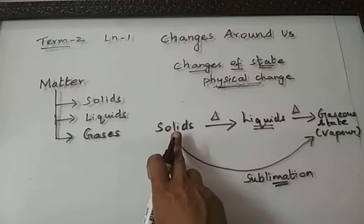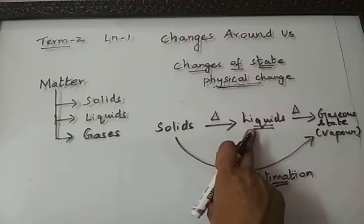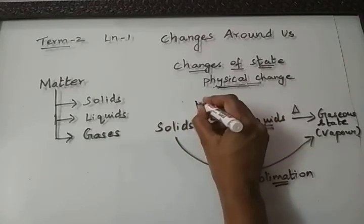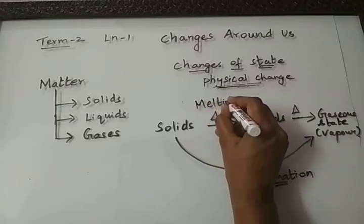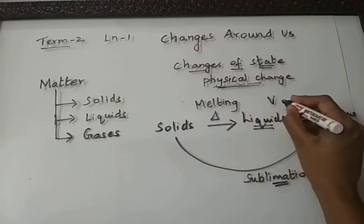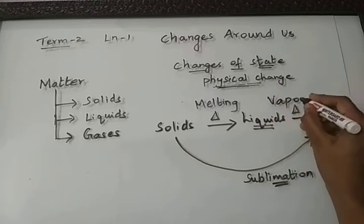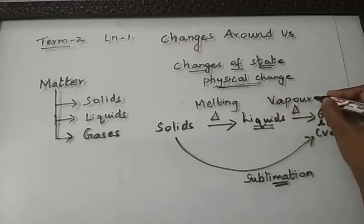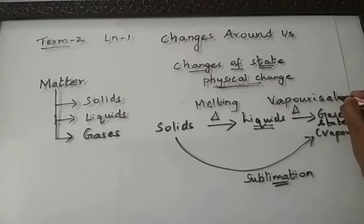What is the process of converting solid to liquid called? It is called melting. And the process of converting liquid to its vapor is called vaporization, and not boiling. You are supposed to write the term as vaporization.